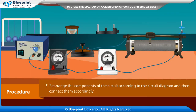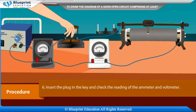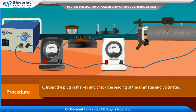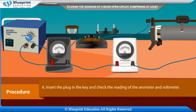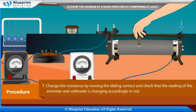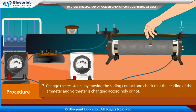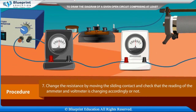Rearrange the components of the circuit according to the corrected circuit diagram and connect them accordingly. Insert the plug in the key and check the reading of the ammeter and voltmeter. Change the resistance by moving the sliding contact and check that the readings of the ammeter and voltmeter are changing accordingly.